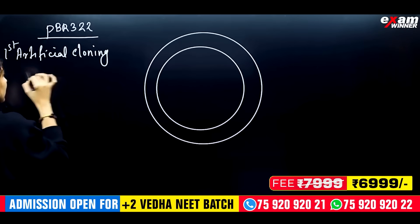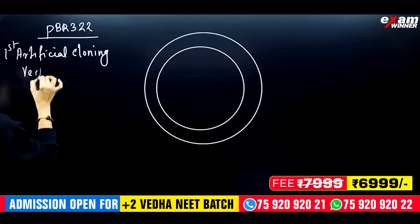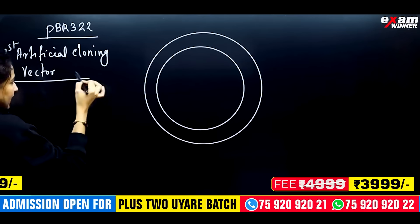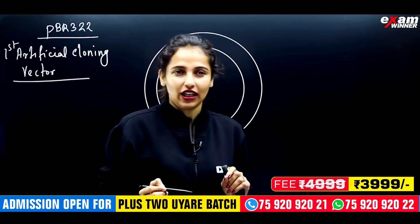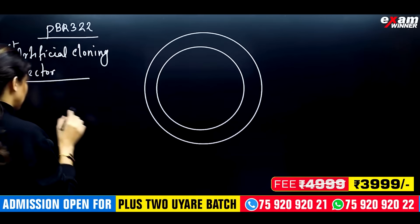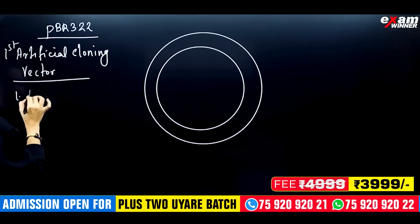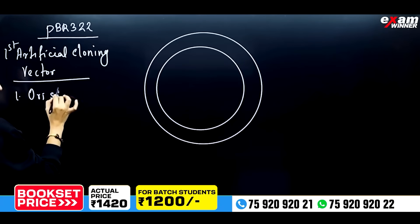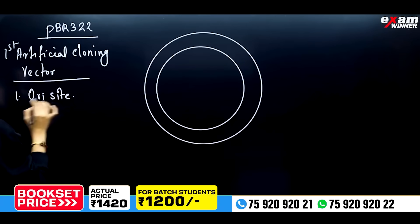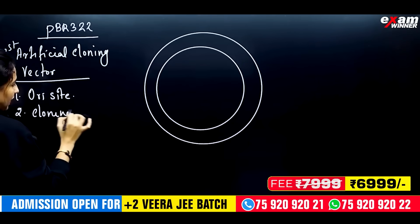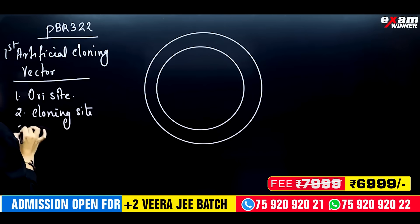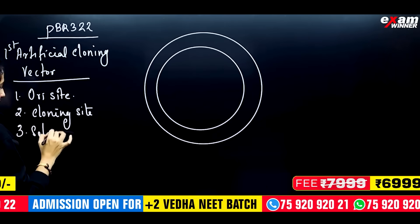One question comes from a cloning vector: essential features that will show you in the exam. The main items are: one, an ori site; two, cloning site or recognition site; and three, selectable markers.